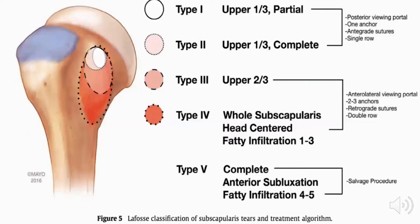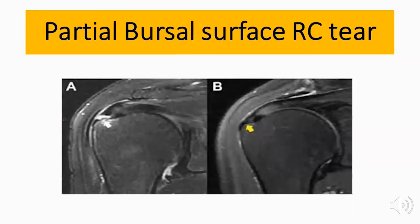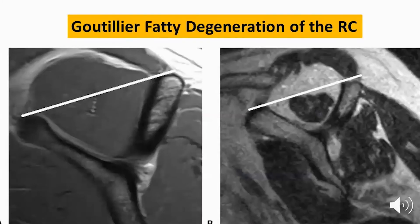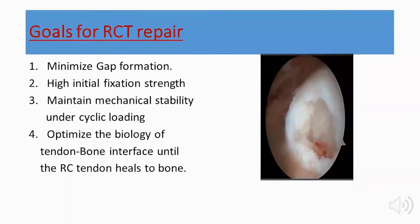This is the MRI showing partial bursal surface tears, and this is an example of a full thickness rotator cuff tear. This is the Goutallier classification showing fatty degeneration of the rotator cuff — on the right side there is complete degeneration of the rotator cuff — and this shows the subscapularis tendon tears.